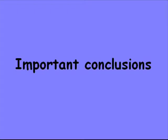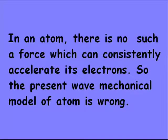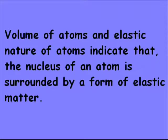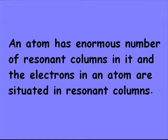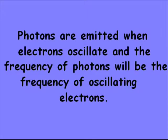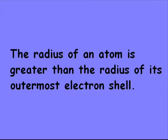Important conclusions: In an atom, there is no such force which can consistently accelerate its electrons, so the present wave mechanical model of the atom is wrong. The volume and elastic nature of atoms indicates that the nucleus of an atom is surrounded by a form of elastic matter. An atom has an enormous number of resonant columns, and the electrons in an atom are situated in resonant columns. Photons are emitted when electrons oscillate, and the frequency of photons equals the frequency of the oscillating electrons. The radius of an atom is greater than the radius of its outermost electron shell.